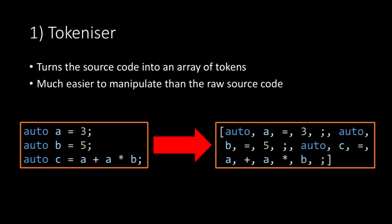The tokenizer takes the source code and turns it into an array of tokens. These tokens are much easier to manipulate than the raw source code itself.